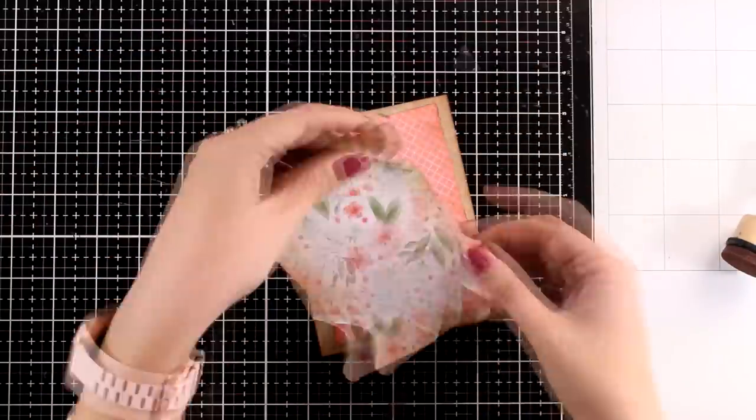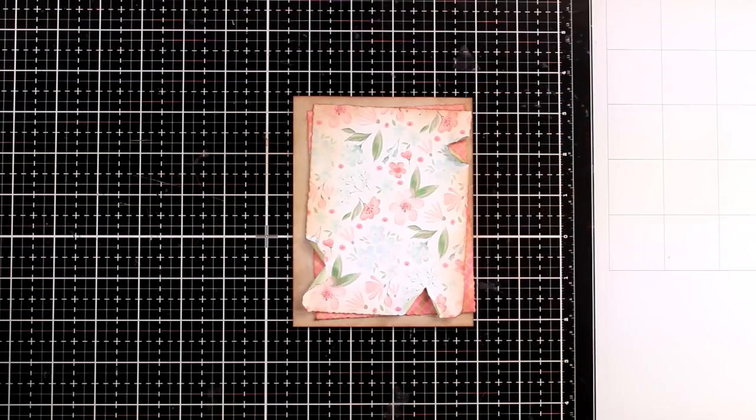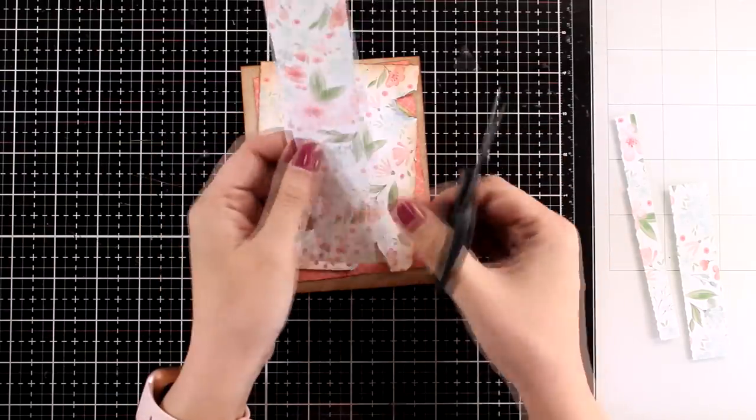I did go ahead and inked up the edges of my craft card base as well. Now I'm going to use the scraps from that 6x6 pattern paper with the flowers and fuzzy cut some of the leaves and flowers.